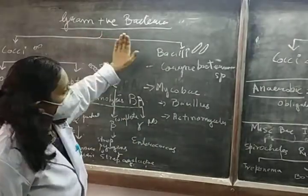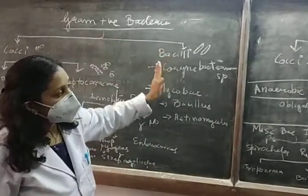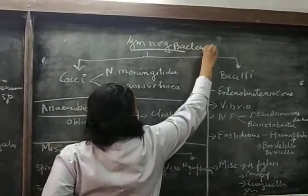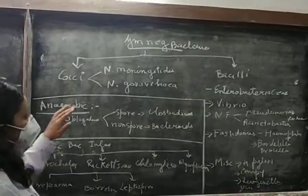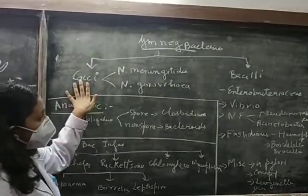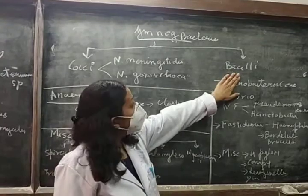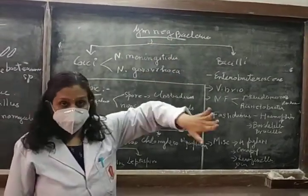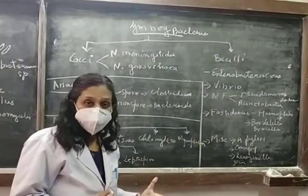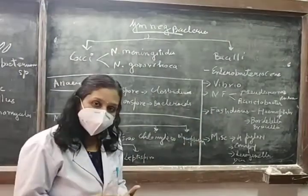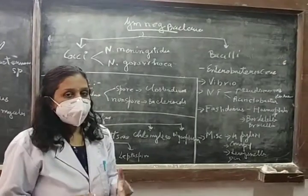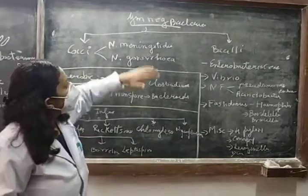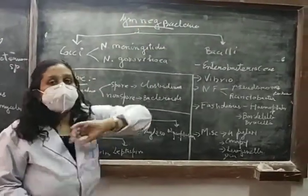That covers gram-positive bacteria. Coming to gram-negative bacteria — we know bacteria are divided into cocci and bacilli. Because it is gram-negative, after staining the colour will become pink. I am not going into detail on how gram staining is performed; I will just give you the overview. The gram-negative bacteria are pink in colour.